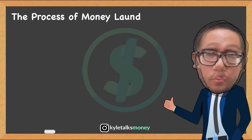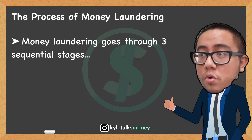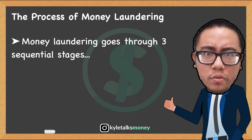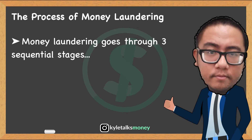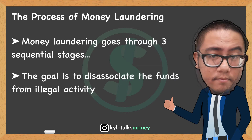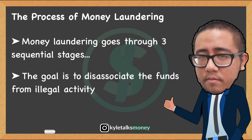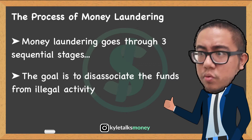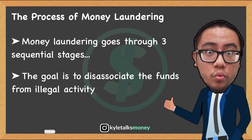So how does money laundering work? Money laundering is a process that generally goes through three sequential stages: one, placement; two, layering; and three, integration. It can also involve more steps depending on the scheme. The ultimate goal is to disassociate the funds from illegal activity such as drug trafficking or organized crime so that you can spend it freely.